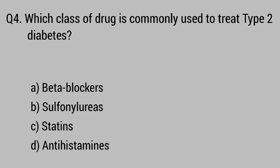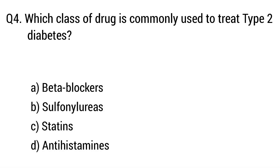Question number four. Which class of drug is commonly used to treat type 2 diabetes? The right answer is option B: Sulfonylureas.